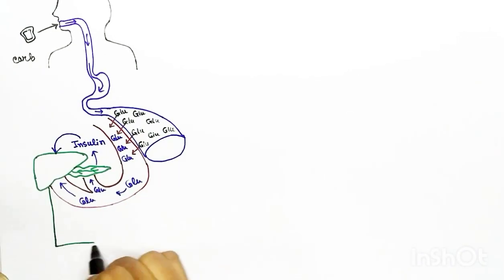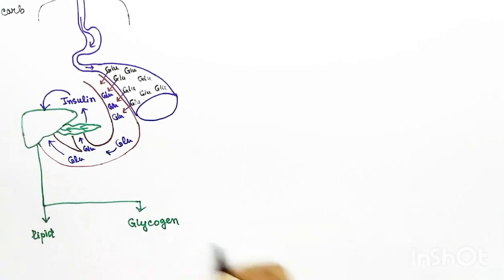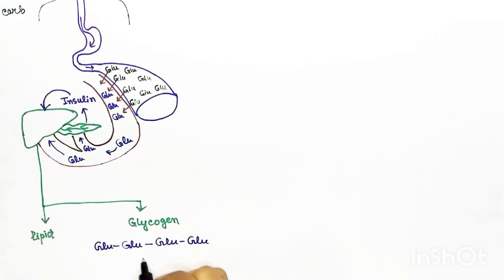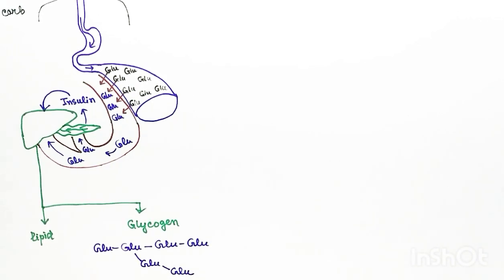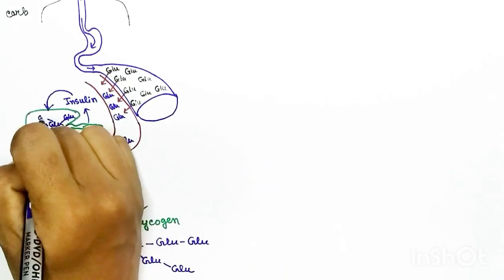Inside the liver cell, the excess glucose can be converted into two types of product: one is lipid and the other is glycogen. Glycogen is a polymer of glucose and it is a branched structure. Just like liver, our muscle cells can also store glycogen.